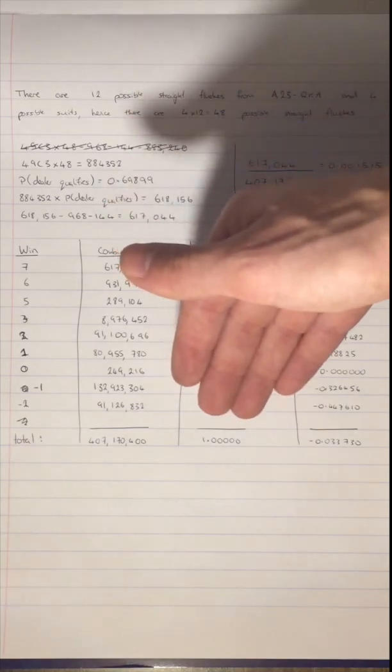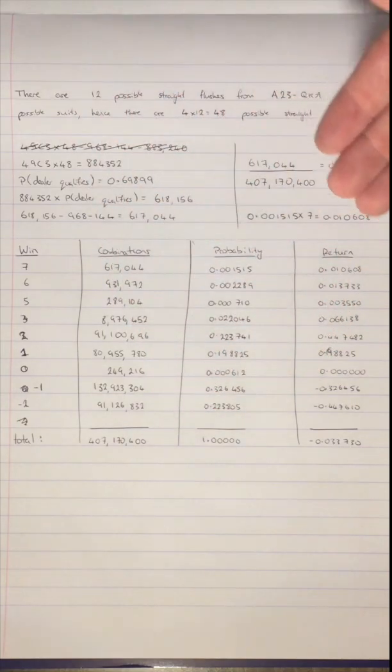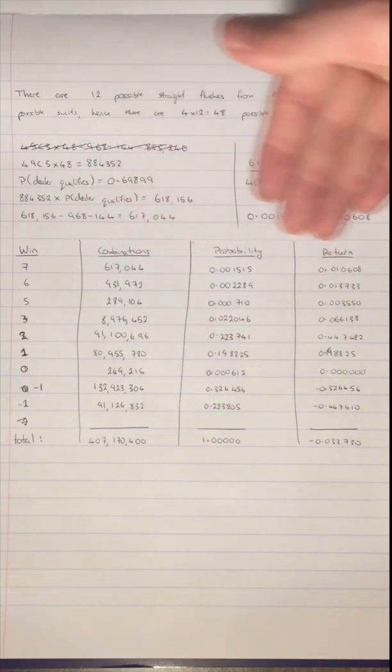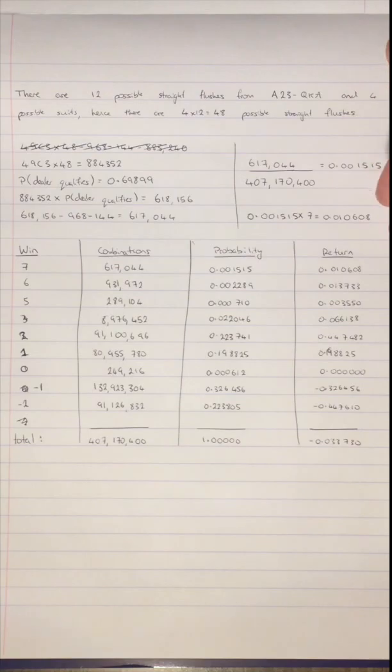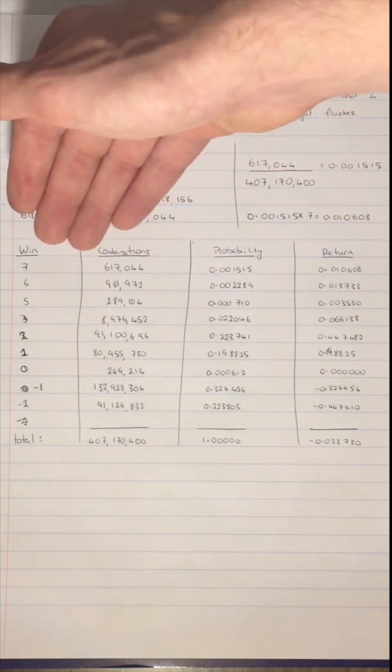And we do this for all of these, just like this, and we gain a probability of 1. Now, the return can also be worked out quite simply. We just multiply the probability of the win.